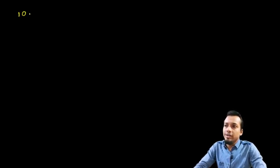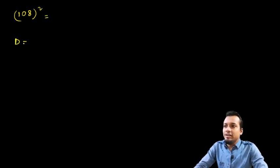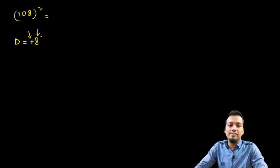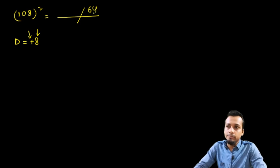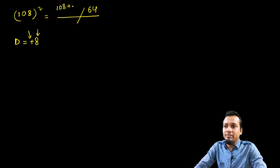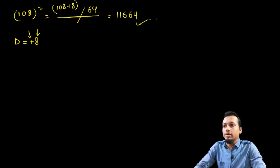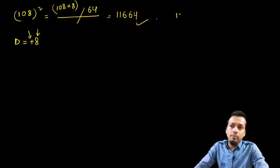Let's find 108 squared. The deviation is plus 8 — always write the plus or minus sign as it has significance. On the right side write the deviation square: 8 squared is 64. On the left side, original number 108 plus deviation 8 gives 116. So the answer is 11664.